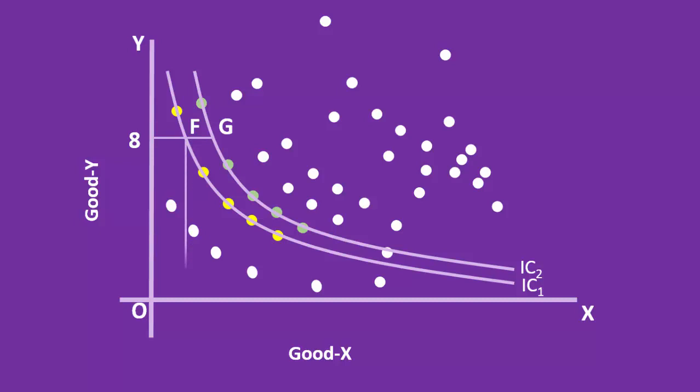But Combination F contains only 1 unit of good X, and Combination G contains 2 units of good X. Since G comprises of more units of good X, it yields a higher level of satisfaction.